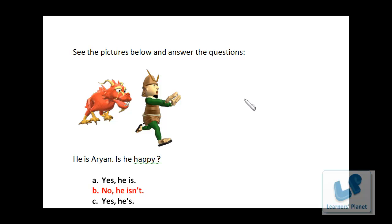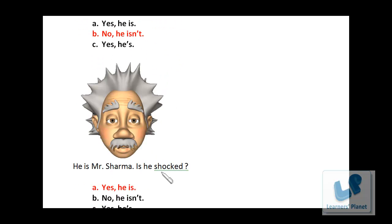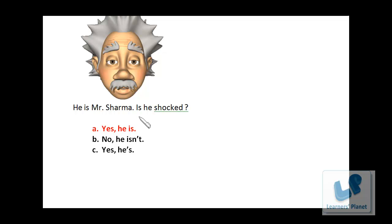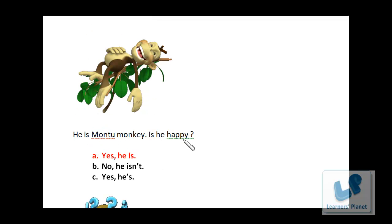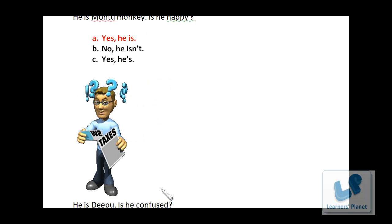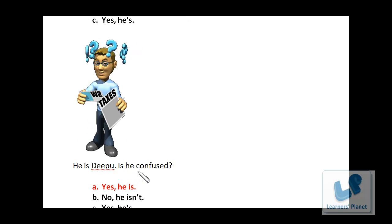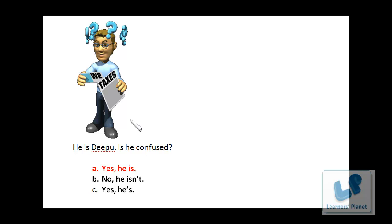Now for our next exercise, we see the pictures and answer the questions asked. This is the first picture — he is Aryan. Is he happy? No, he isn't. He is Mr. Sharma. Is he shocked? Yes, he is. He is Montu Monkey. Is he happy? Yes, he is. He is Deepu. Is he confused? Yes, he is. We saw the pictures and answered the questions. You are supposed to answer by looking at the people's faces and the expressions they give.